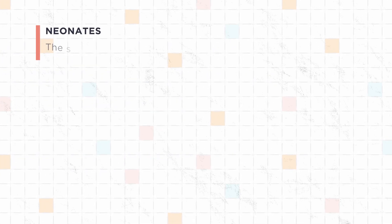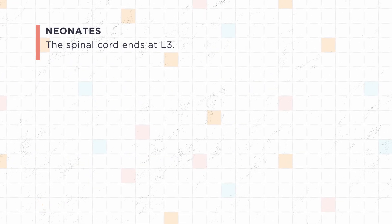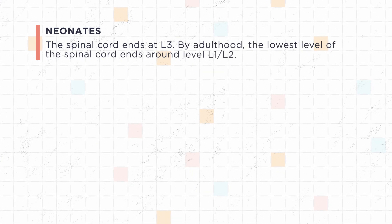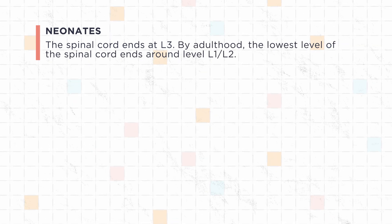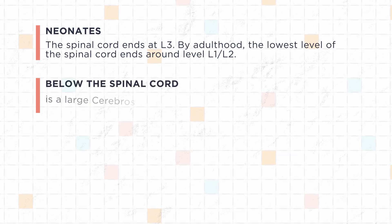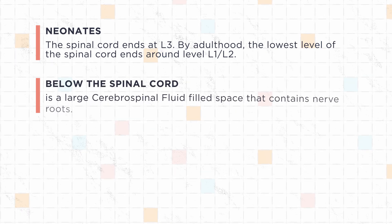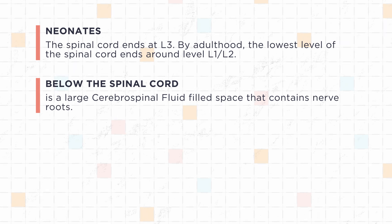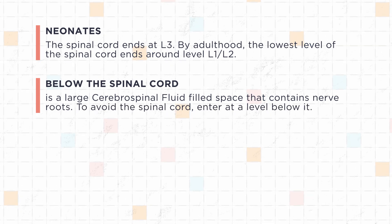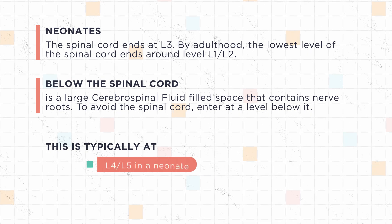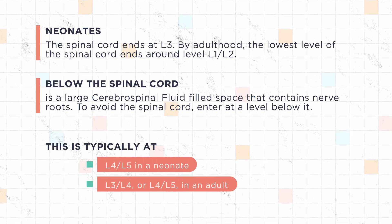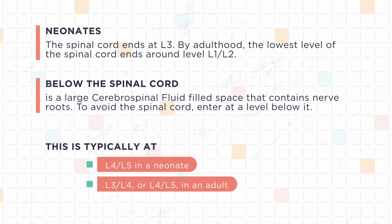In neonates, the spinal cord ends at L3. By adulthood, the lowest level of the spinal cord ends around L1-L2. Below the spinal cord is a large cerebrospinal fluid-filled space that contains nerve roots. To avoid the spinal cord, enter at a level below it — typically at L4-5 in a neonate and L3-L4 or L4-L5 in an adult.